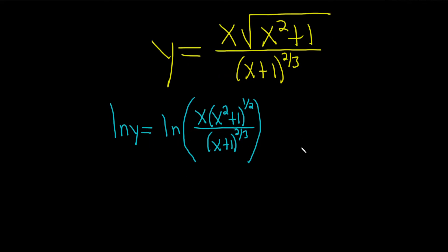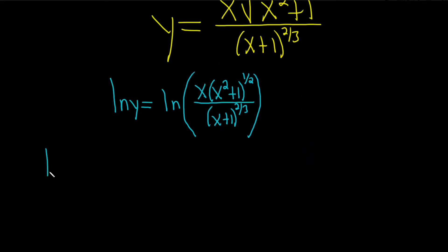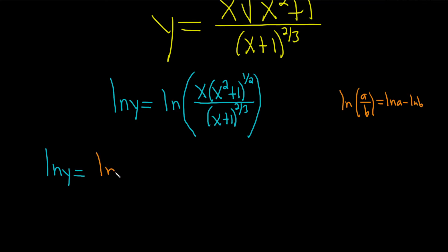Now we can use properties of logs to break this up. The natural log of y equals — first we'll use the quotient rule, which says if you have the natural log of a over b, that's equal to the natural log of a minus the natural log of b. So this becomes the natural log of the numerator, x times x squared plus 1 to the one-half, minus the natural log of the bottom, x plus 1 to the two-thirds.